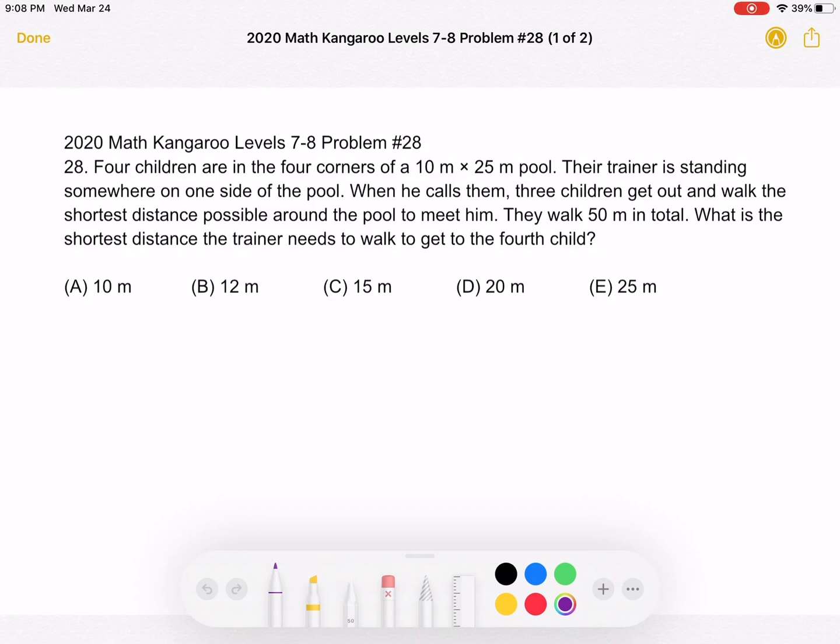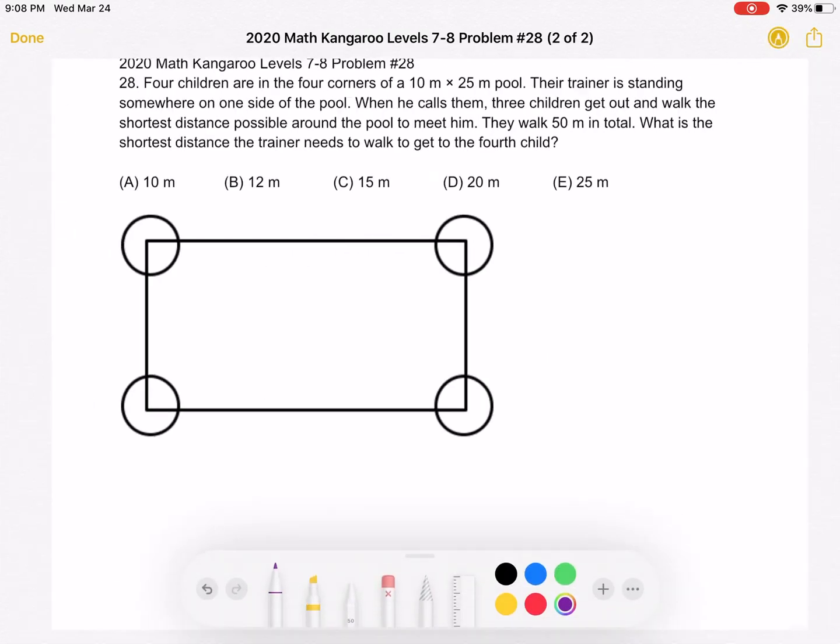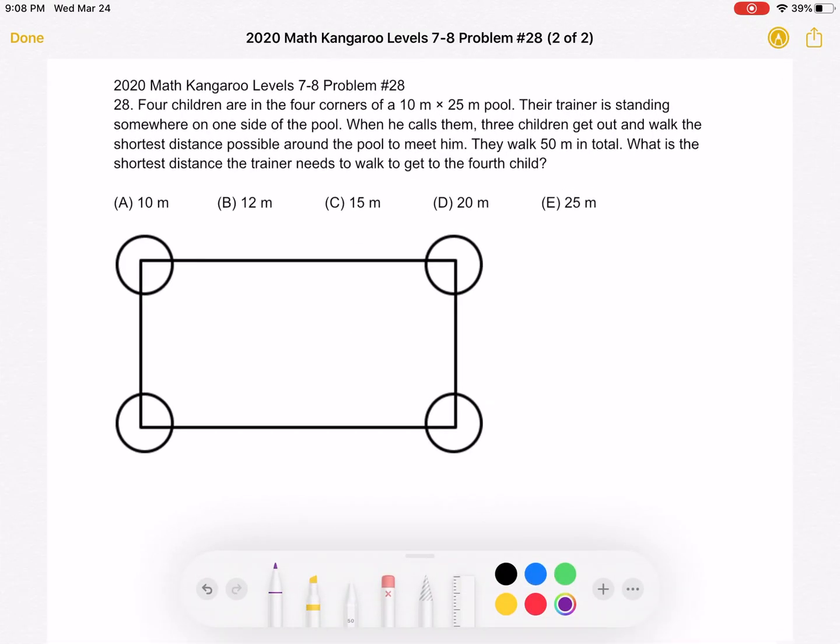This is the problem as it originally appeared on the test, and here is where we'll be doing the solution. So to start, as you can see, I've drawn the pool that's 10 meters by 25 meters, and the circles at each corner represent the children because we have one child at each of the four corners of the pool.